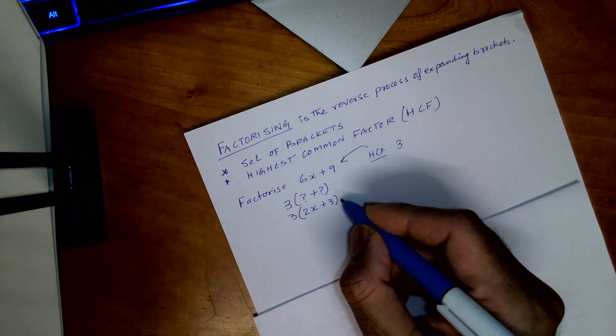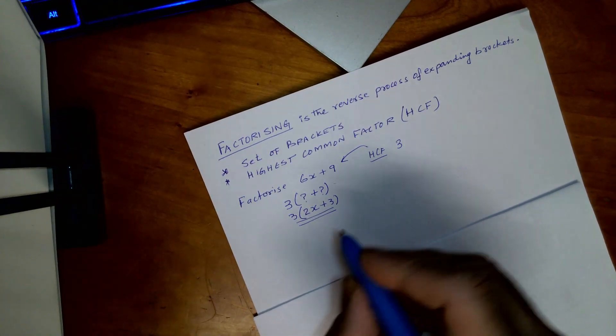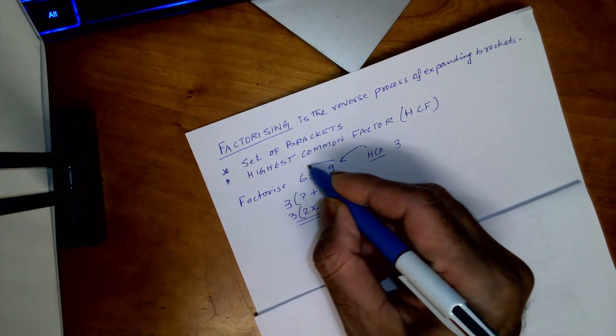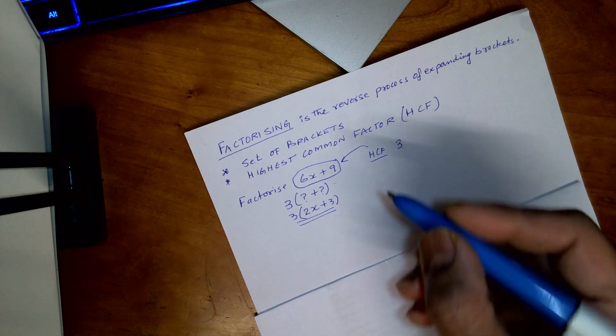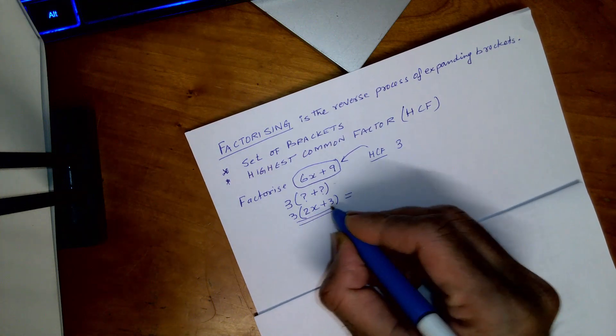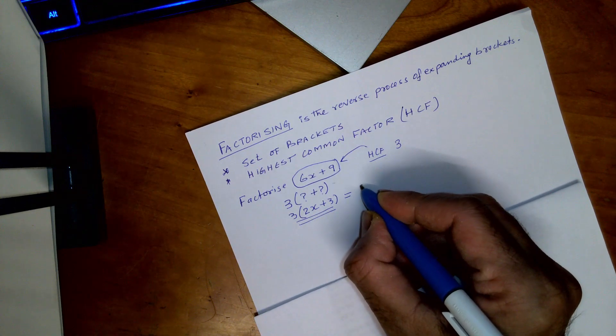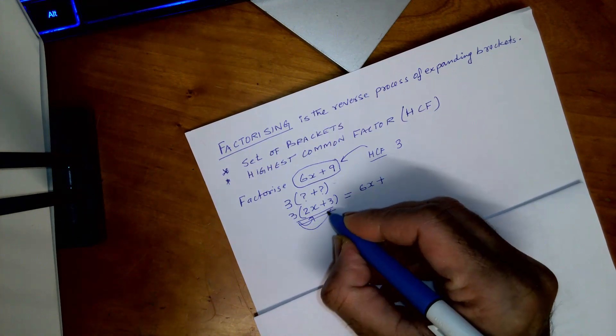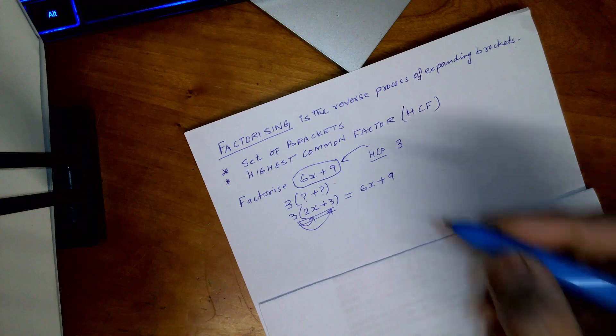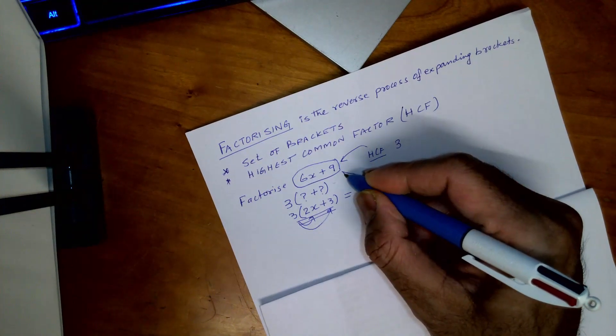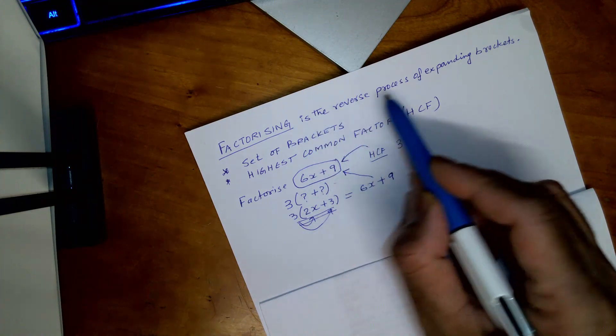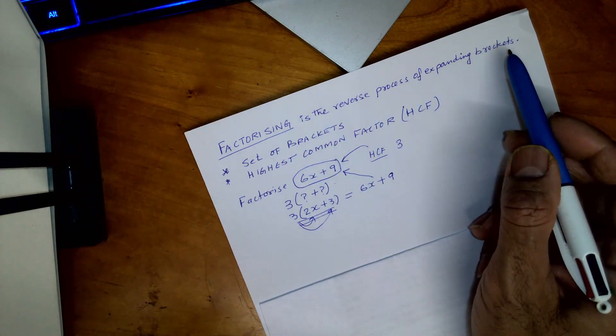So if I open this, that will be 6x plus 9. So you see, as I said earlier, the factorizing is the reverse process of expanding brackets.